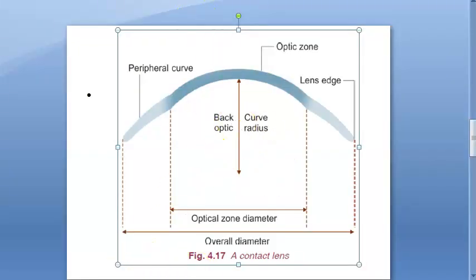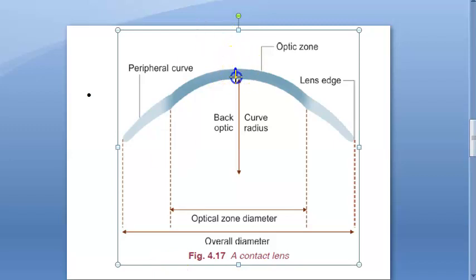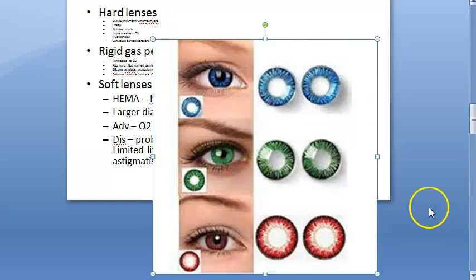The lens edge is polished and blended. The power of the lens is measured in terms of posterior vertex power in diopters — the central anterior curvature determines the power. Thickness refers to the center thickness of the lens, and the tint refers to the color of the lens.